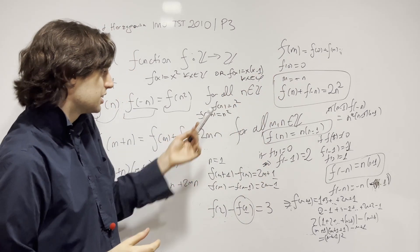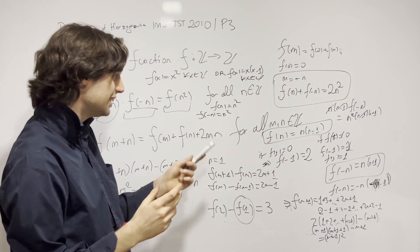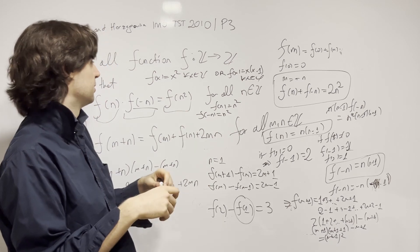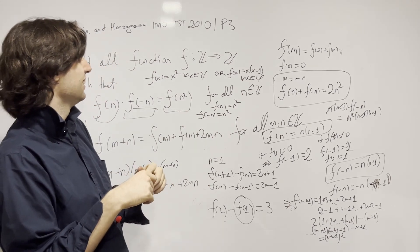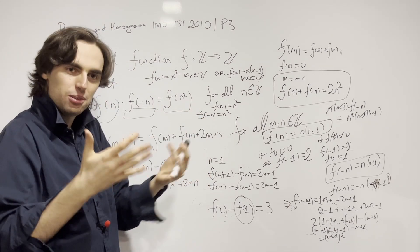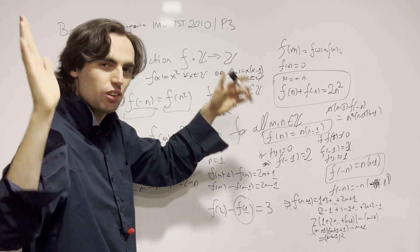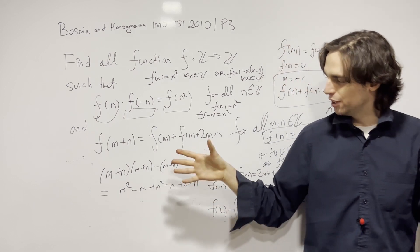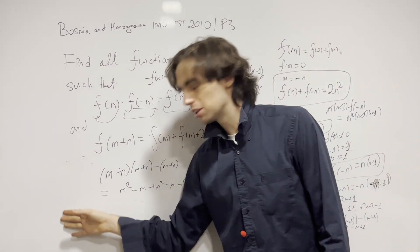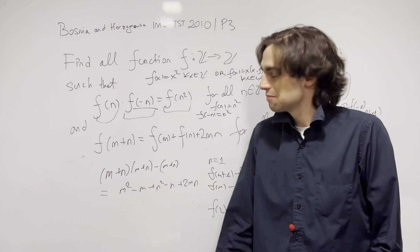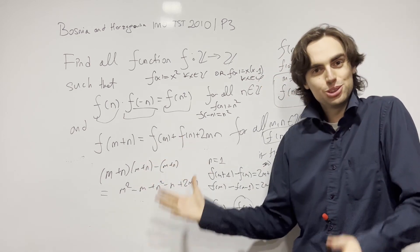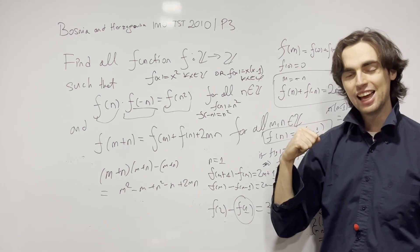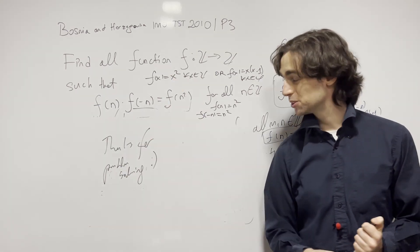So the solutions to the functional equations are f(x) = x² for all integers x, or f(x) = x(x-1) for all integers x. This finishes up our problem. It's surprising — I didn't think we had two solutions when I first looked at this today. It goes to show: sometimes you think there's only one solution and you've guessed it, but in reality there might be others. Push it as far as you can — get to your contradiction, or in this case, get to another solution. Thanks for problem solving!